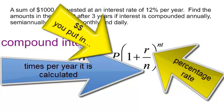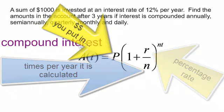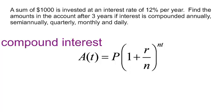N is how many times per year you're going to calculate the interest. Is it annually, which is one time a year, semi-annually, two times a year, quarterly, four times a year.